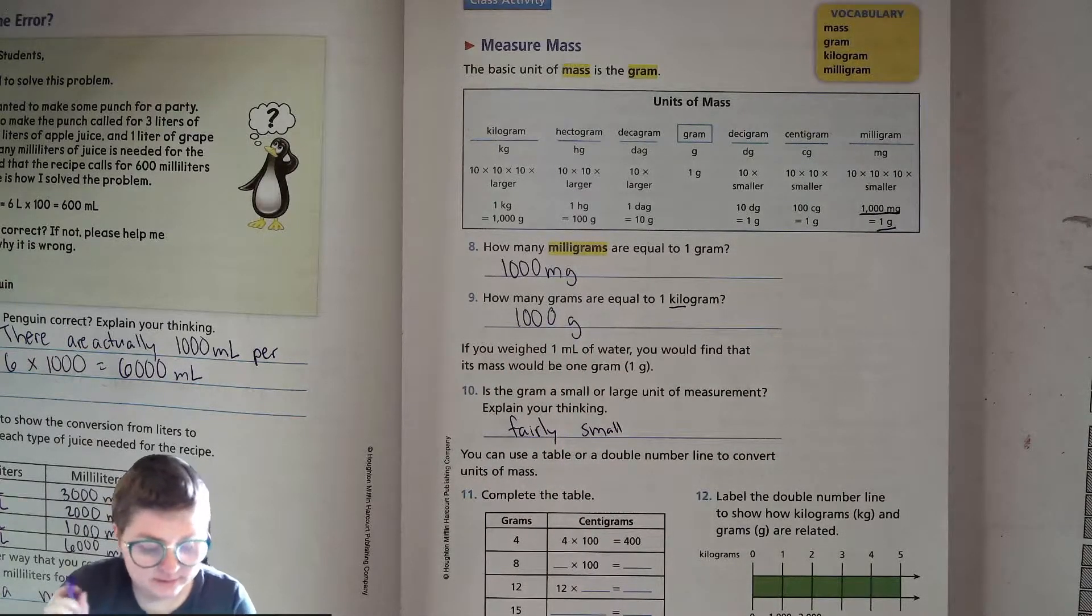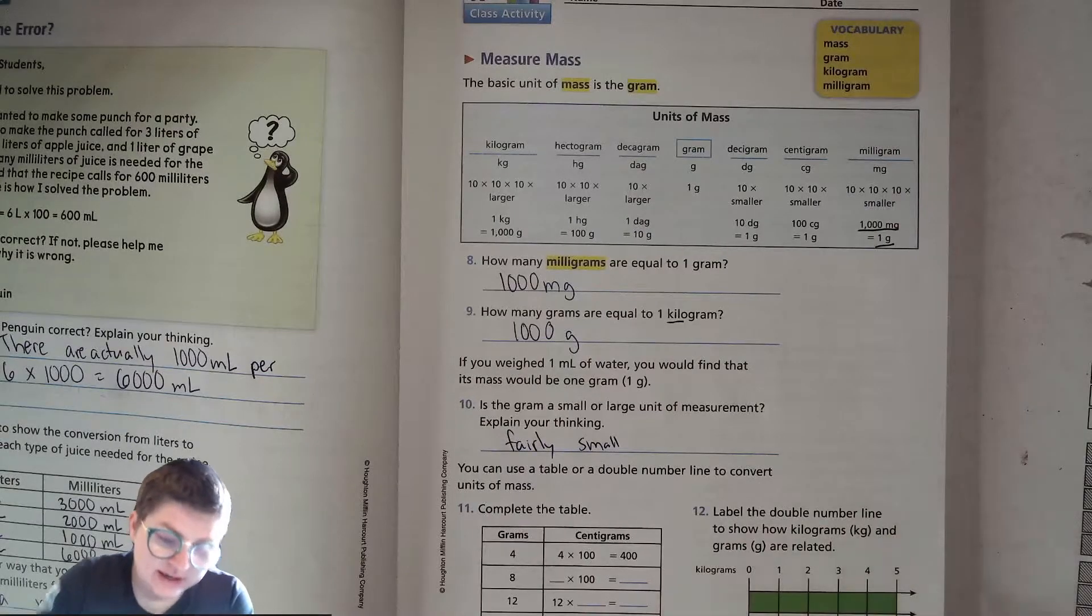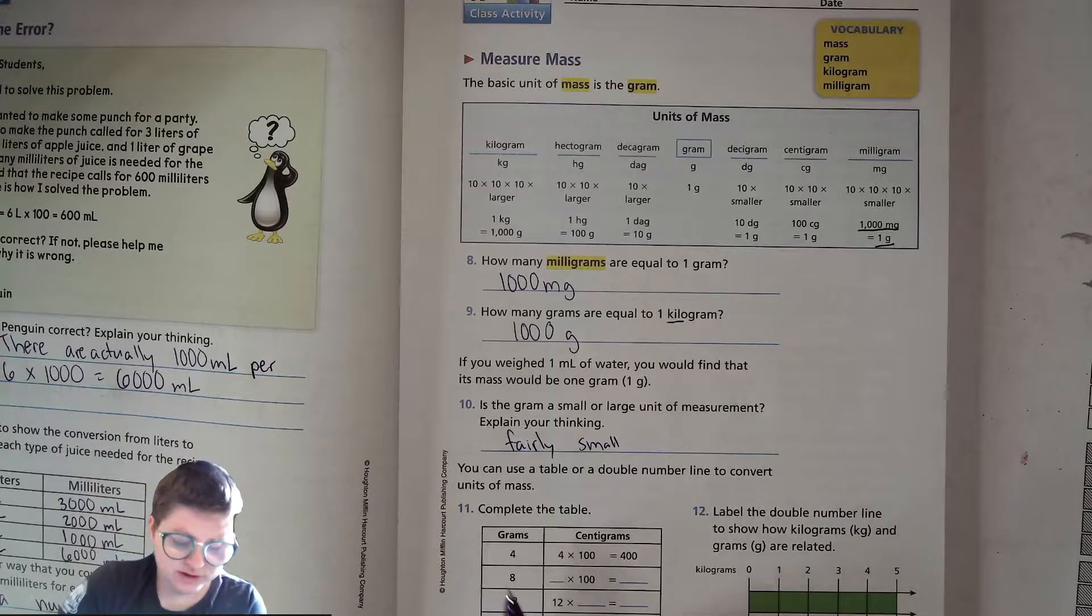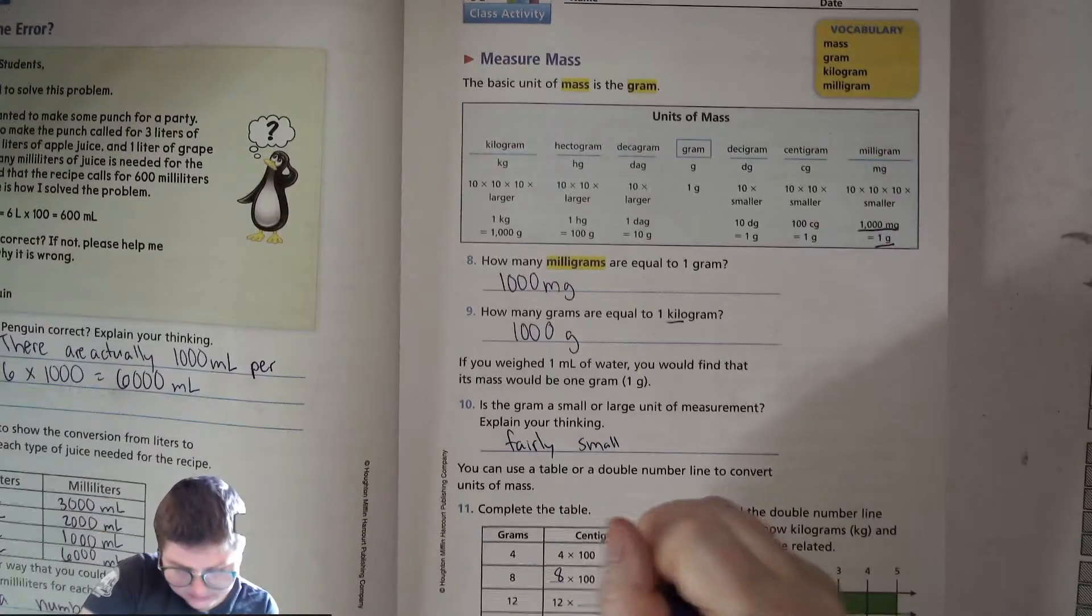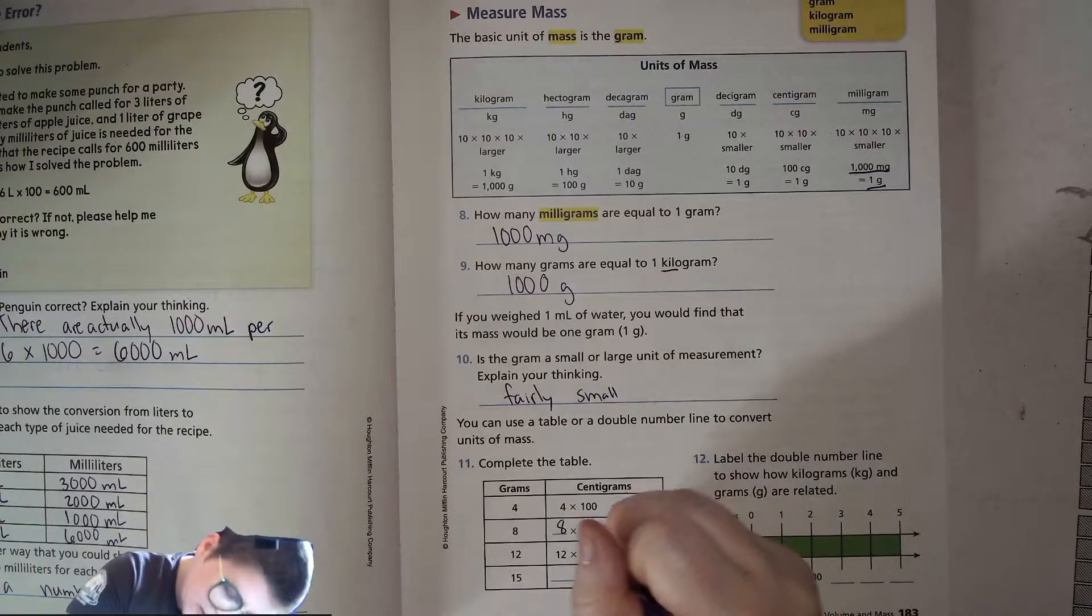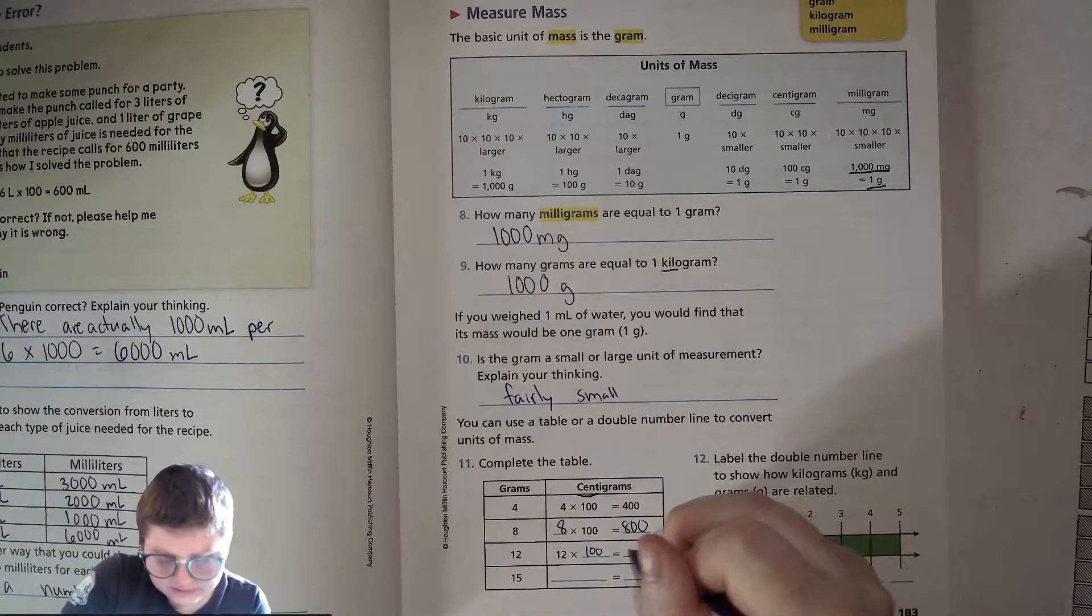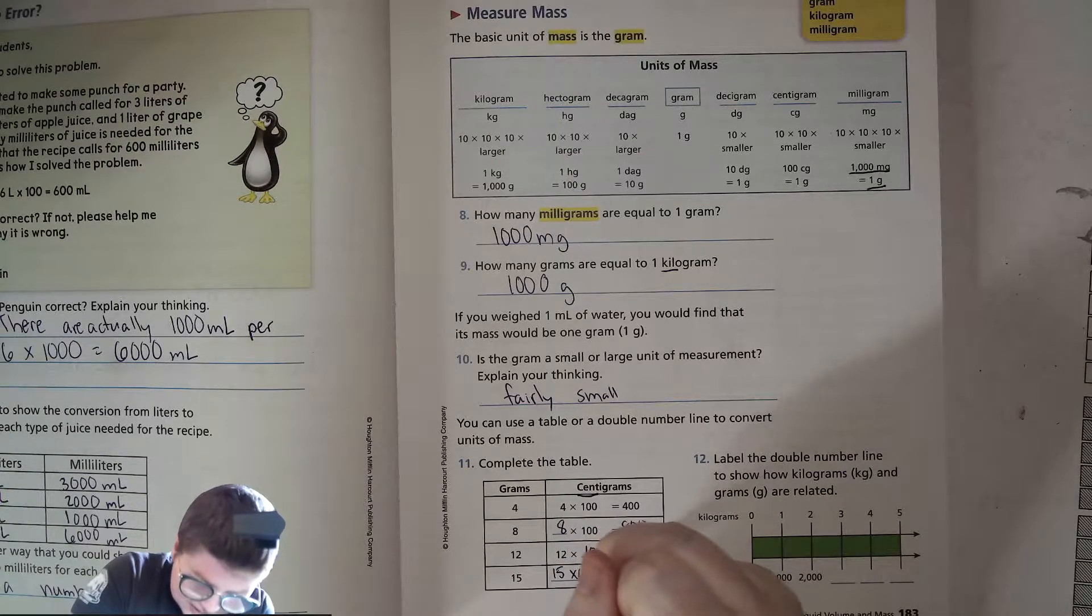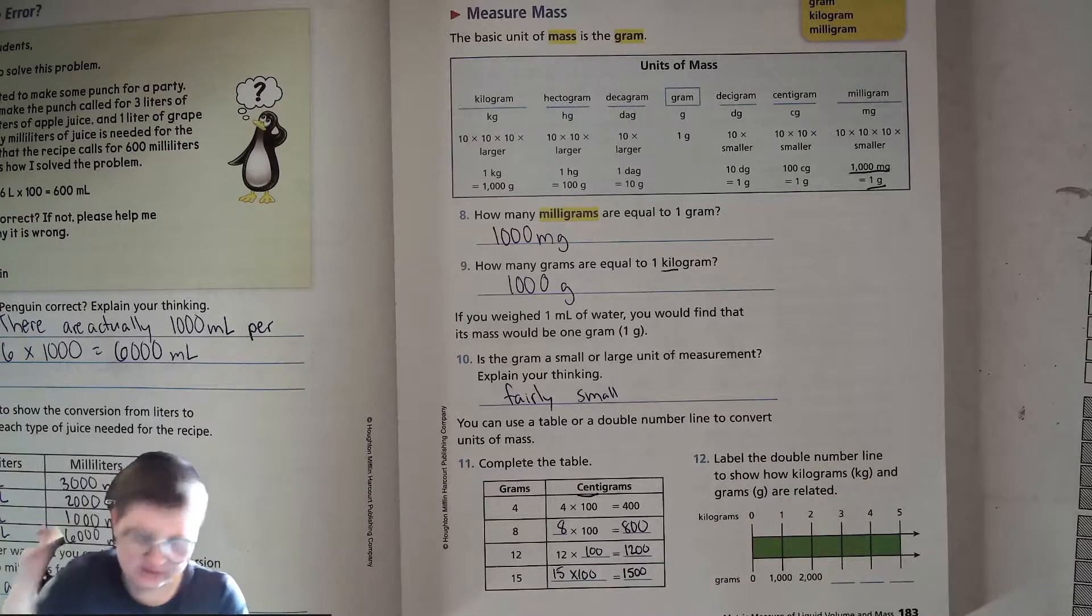So it's fairly small. For some things, like I said, though, it's a little bit too big and you want to use something smaller. So now we're practicing converting from grams to centigrams. To find the number of centigrams, if no grams, you just multiply it by 100. So 4 grams is 400 centigrams. 8 grams is 8 times 100. So 800 centigrams. 12 times 100 is 1200. Remember just like how many cents in a dollar? Cent means 100.